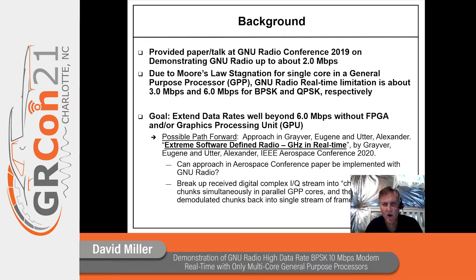So can we overcome that 6 megabits per second limitation? An Aerospace Conference 2020 paper I think provides a path forward. Can the approach in that paper be used with GNU Radio? Basically, we break up the complex IQ stream into chunks, then we process the chunks simultaneously in parallel cores, and then the frame stream is stitched back together again in order by using the frame header counter.